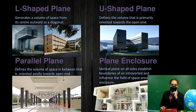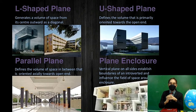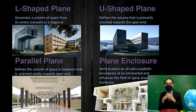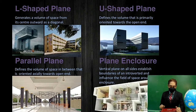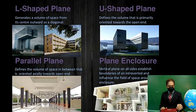The L-shaped plane generates a volume of space from its center outward as a diagonal. The parallel plane defines the volume of space in between, oriented axially toward the open end. The U-shaped plane defines a volume that is primarily oriented toward the open end. The enclosing plane, with vertical planes on all sides, establishes boundaries of an introverted space and influences the field of space around the enclosure.